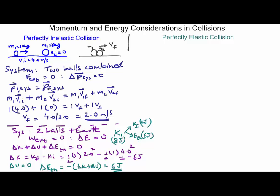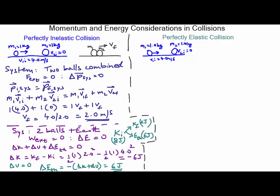Now let's take that same situation, but look at what would happen if these two balls collided in a perfectly elastic manner instead. The before situation is the same: a 1 kilogram mass M1 going at V1i of 4 meters per second, hitting a 1 kilogram mass M2 that's initially stationary, V2i = 0. But now they have a perfectly elastic collision — the balls bounce off of each other such that kinetic energy before the collision equals kinetic energy after the collision.